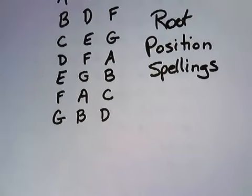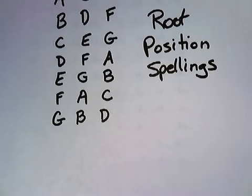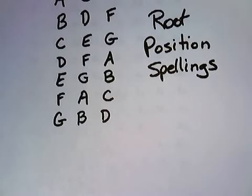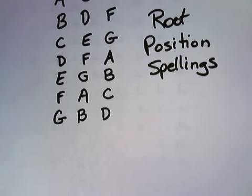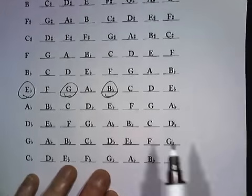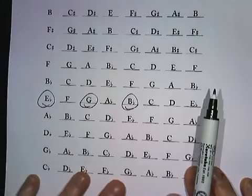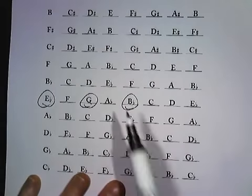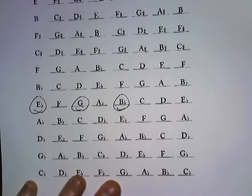This is exactly what we did when we did intervals. We calculated the size of the intervals only using our fingers and counting letters of the alphabet. But the qualities happen when we apply accidentals based on our scale. Okay, so EGB is the generic spelling. E flat, G, B flat makes it a major triad.